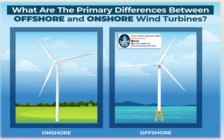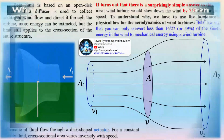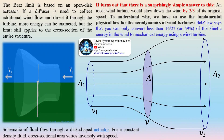Betz's law shows that as air flows through a certain area, and as wind speed slows from losing energy to extraction from a turbine, the airflow must distribute to a wider area. As a result, geometry limits any turbine efficiency to a maximum of 59.3 percent.